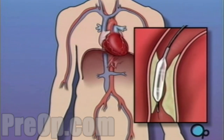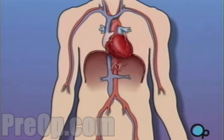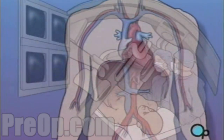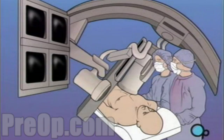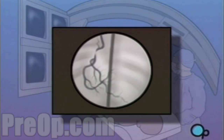A short length of mesh tubing called a stent is then inserted into the newly widened artery. During and after the procedure, your doctor will take x-rays in order to monitor your progress.